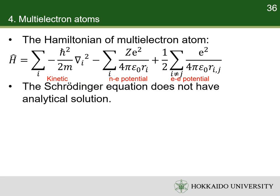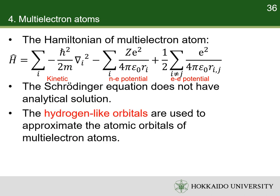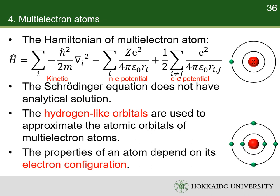Unlike the hydrogen atom, the Schrödinger equation of any multi-electron atom does not have an analytical solution. In chemistry, the hydrogen-like orbitals are used to approximate the atomic orbitals of multi-electron atoms. The hydrogen-like orbitals are derived from the exact solutions of the Schrödinger equation for a hydrogen-like atom — that is, one electron and one nucleus — and are the same as hydrogen atom orbitals except for the influence from the nuclear charge number. The properties of an atom depend on the distribution of electrons in its atomic orbitals, known as the electron configuration of the atom.